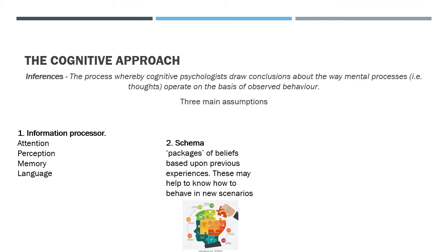The second assumption is schema — packages of beliefs based on previous experiences. These can be positive, helping you know how to behave in a new scenario, or negative. For example, if you felt panicked in a previous exam, that schema may make you feel panicky again even after thorough revision, reducing your ability to achieve a high grade.